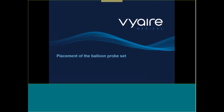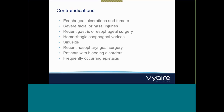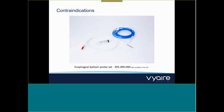We're going to touch on the placement of the balloon probe set. There are a number of scenarios where placement of the esophageal catheter would not be appropriate and is therefore contraindicated — most are common-sense scenarios linked to recent surgery, trauma, or coagulopathy. The esophageal balloon probe set provides all accessories needed for esophageal pressure monitoring. Alternatives are the Nutrivent and Cooper Surgical catheters, both of which incorporate feeding options.